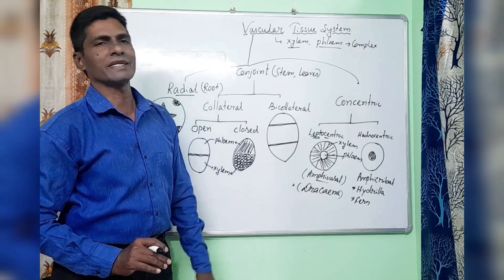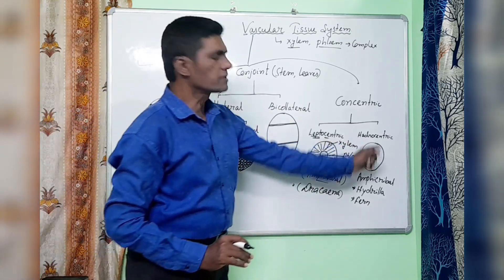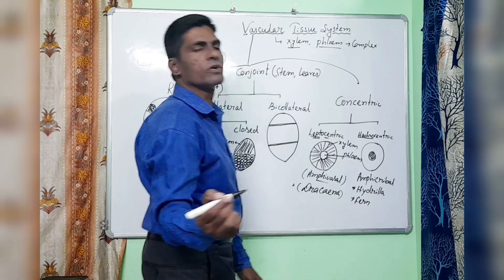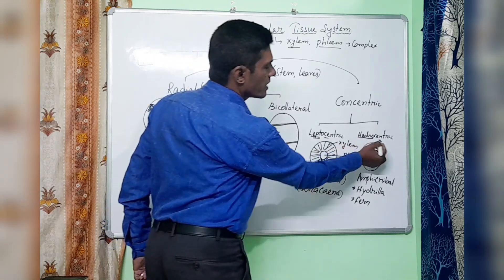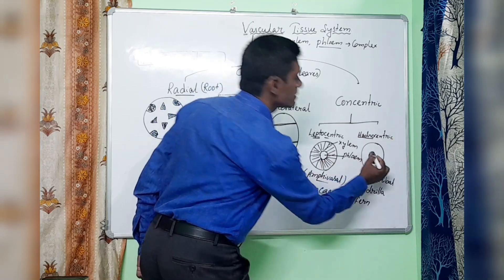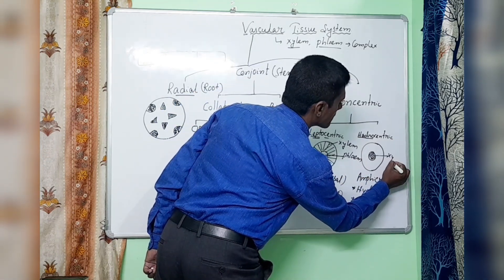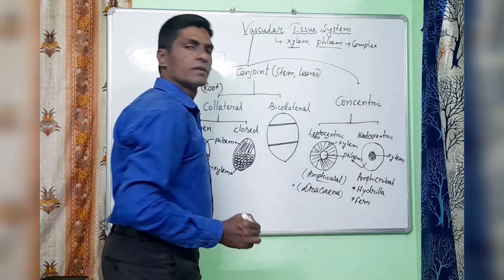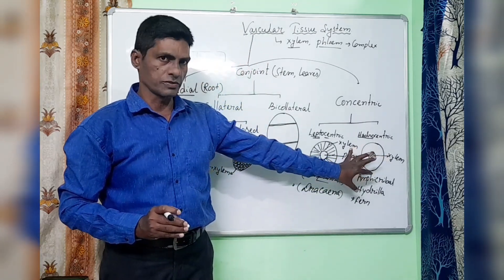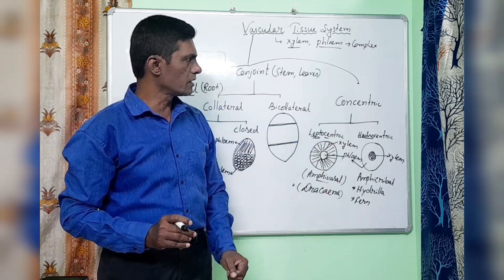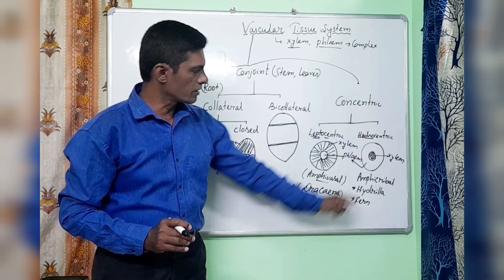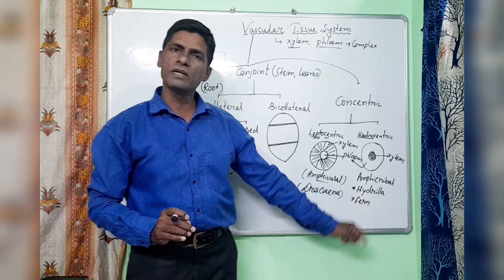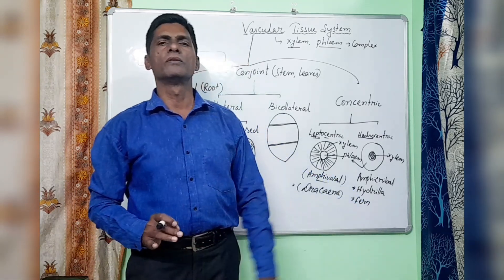The next type is called hydrocentric. Hydro means water, and the water-conducting tissue is xylem. So hydrocentric means xylem is at the center, and it is surrounded by phloem tissue. If the xylem tissue is surrounded by phloem tissue, this type of concentric vascular bundle is called hydrocentric or amphicribal type, and it is mostly found in aquatic plants like Hydrilla and fern plants.